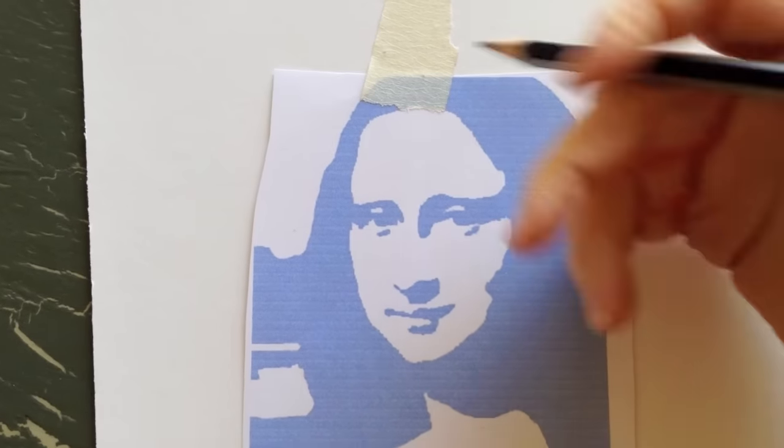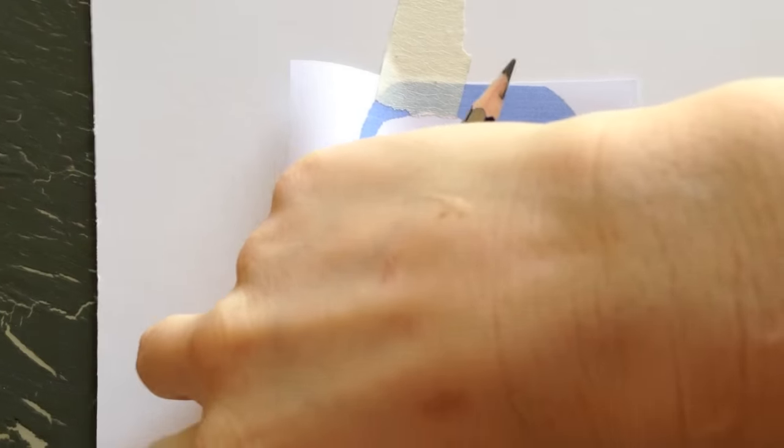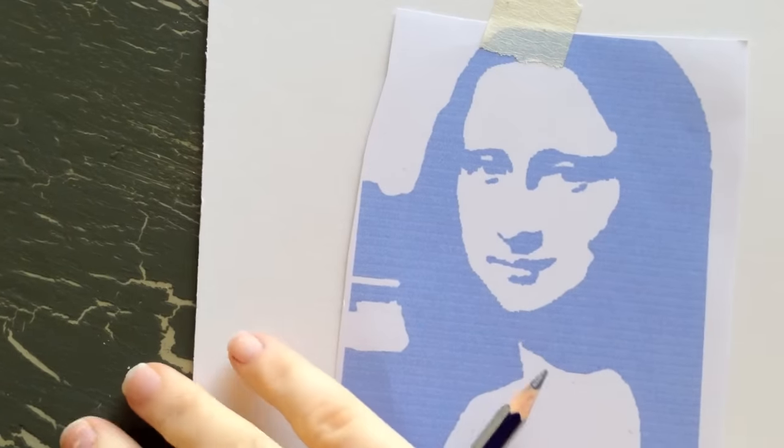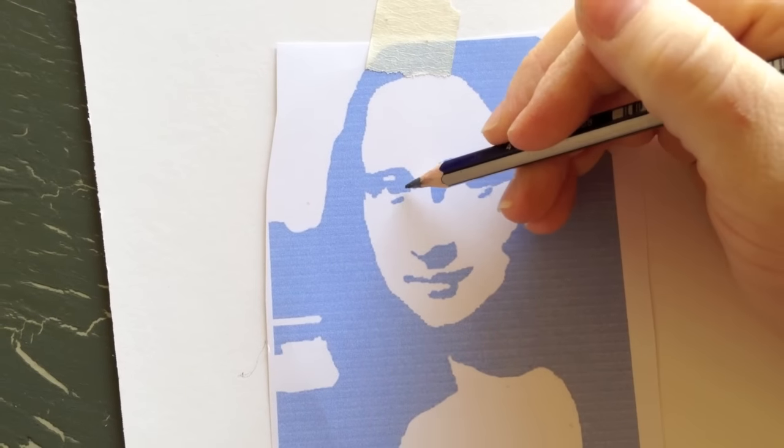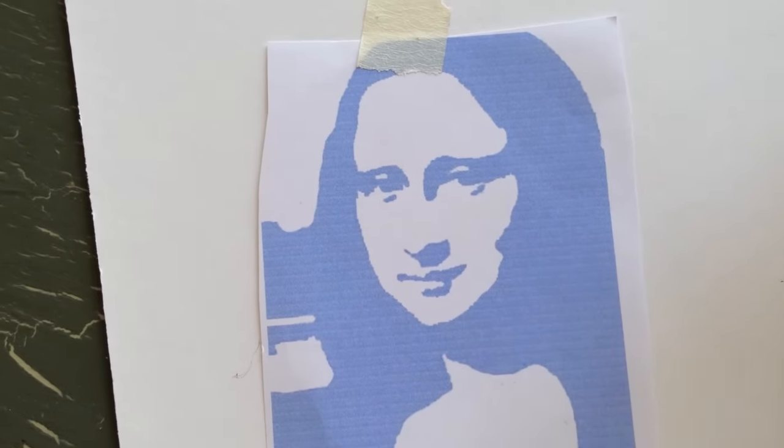And then you're going to trace over the lines, and I have just placed my image over my paper. And what happens when you press down and trace over your shapes, it presses a line into the paper underneath.